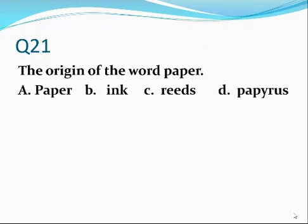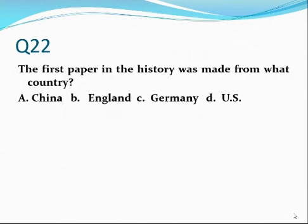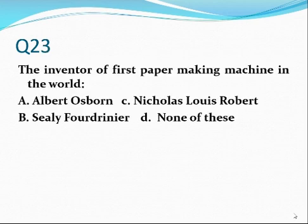Number twenty-one. The origin of the word paper? Delta — from the word papyrus, which comes from a plant reed. Number twenty-two. The first paper in history was made in what country? China — alpha. It was made from China.